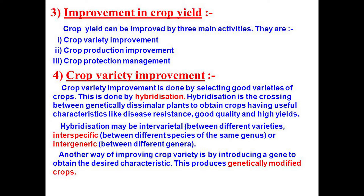First, crop variety improvement. Cereals like wheat, rice, maize and millets provide us carbohydrates for energy. Pulses like gram, black gram and green gram give us protein. Oilseeds like sunflower, soya bean and mustard give us fat, and different types of fruits provide vitamins and minerals. There are also fodder crops — oats, Sudan grass or rice — grown as feed for livestock.